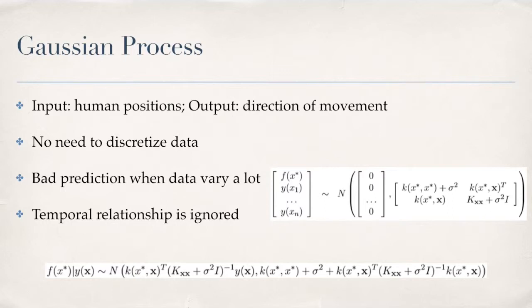The first method we use to predict pedestrian movements is the Gaussian process. The idea is that people usually walk to the right on the corridor, so the flow on the corridor usually follows a pattern. Therefore, we can treat the direction of movement as a function of position. By using the Gaussian process, we can estimate the probability distribution on the direction of movement over the space and also make prediction on it with human position as the input.